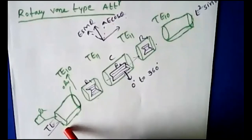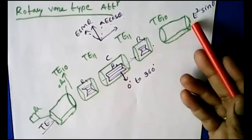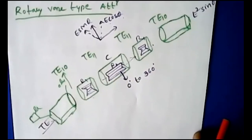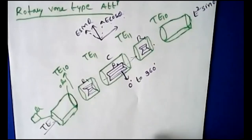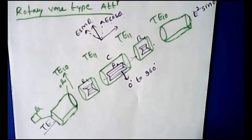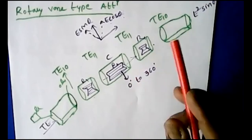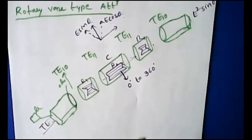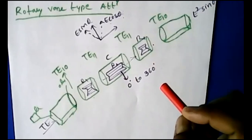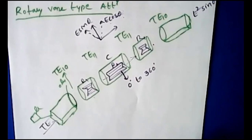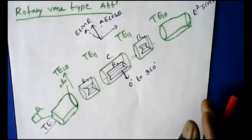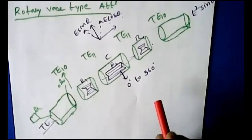The rotary vane attenuator converts rectangular to circular waveguide. The two outer resistive cards are fixed and the center one is rotatable. If you have any doubts you can ask, and material will be shared after class. In the next class we'll see waveguide phase shifters — fixed and variable phase shifters — and their different classifications.